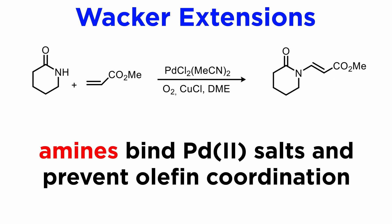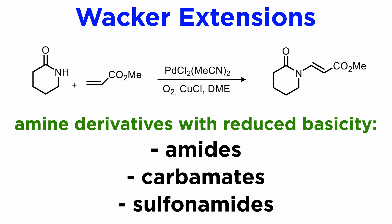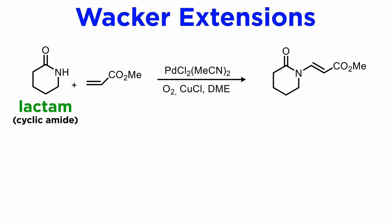Using amines as nucleophiles is problematic because they extensively bind palladium-2 salts and prevent olefin coordination with palladium. For this reason, amine derivatives with reduced basicity are used instead, like amides, carbamates, sulfonamides, and so forth. In the example shown here, a lactam, which refers to a cyclic amide, reacts in excellent yield to produce an enamide. Note the use of copper-1 salts as co-catalysts; they can also be used because they are oxidized in situ by oxygen gas to copper-2.